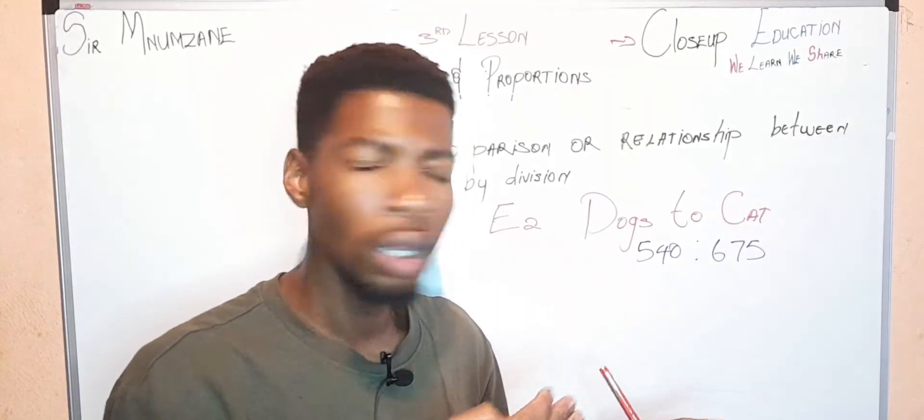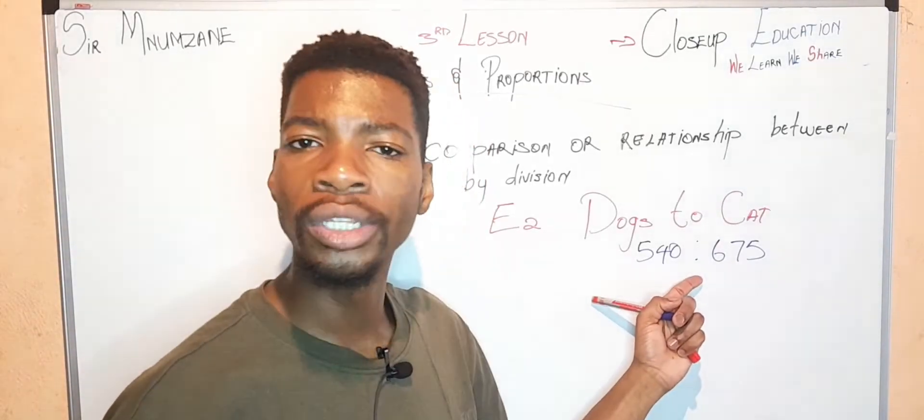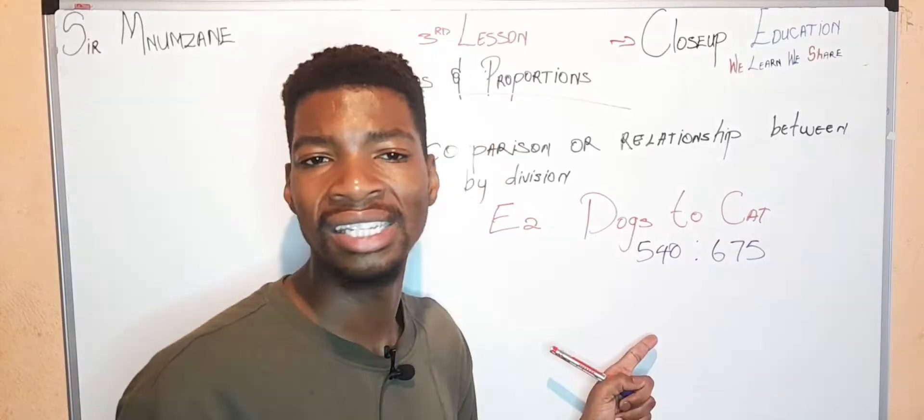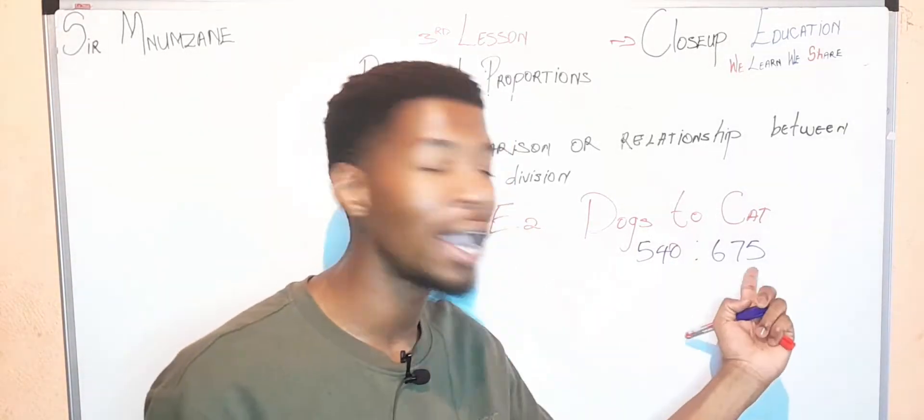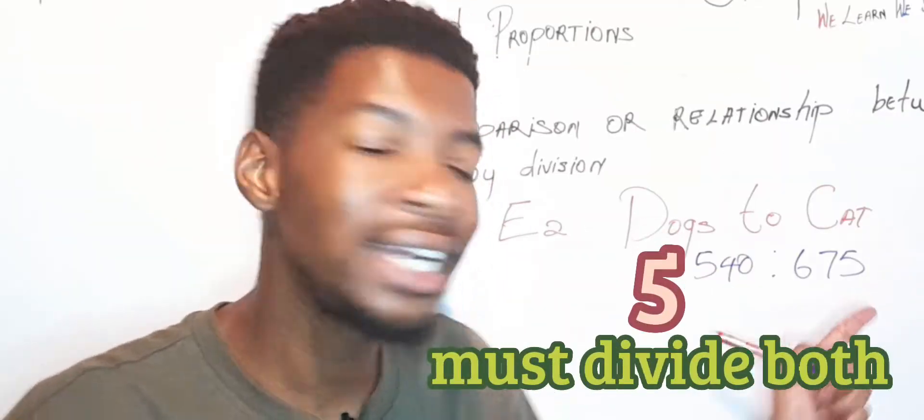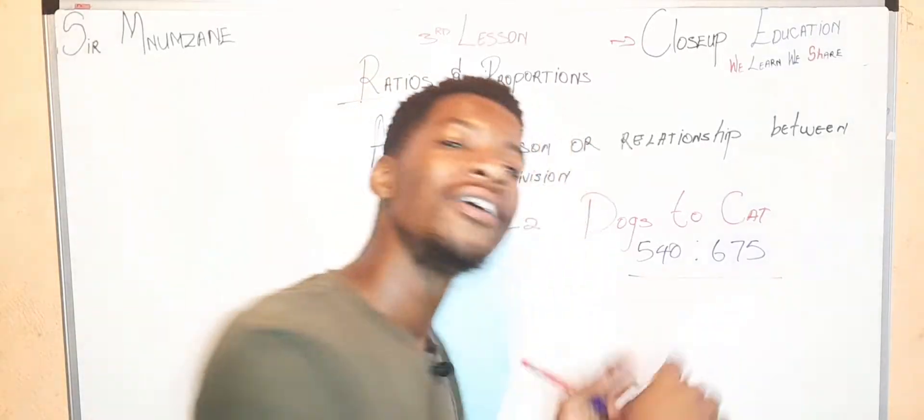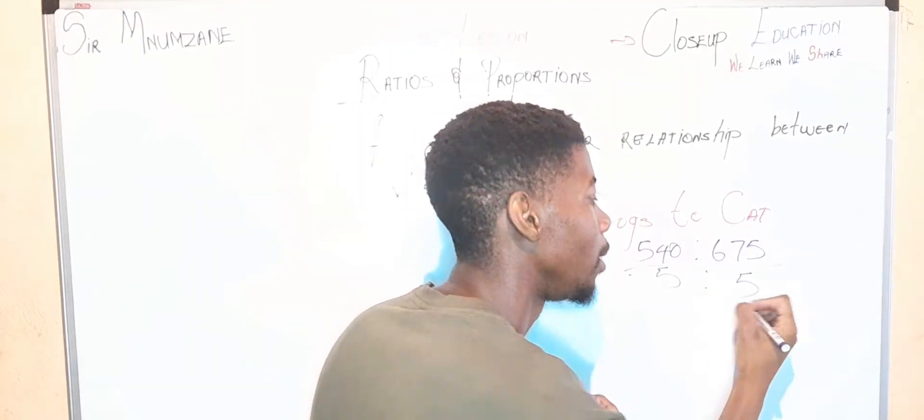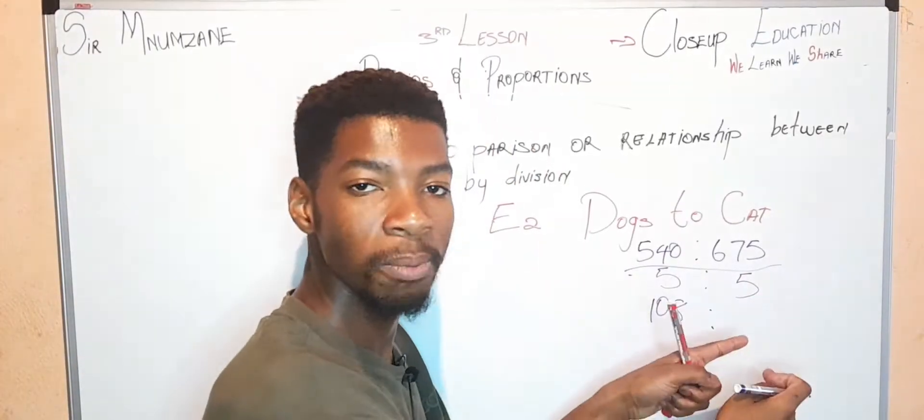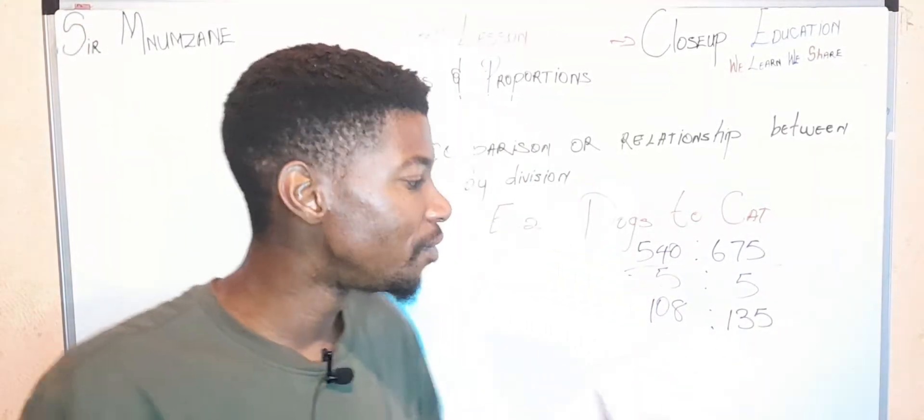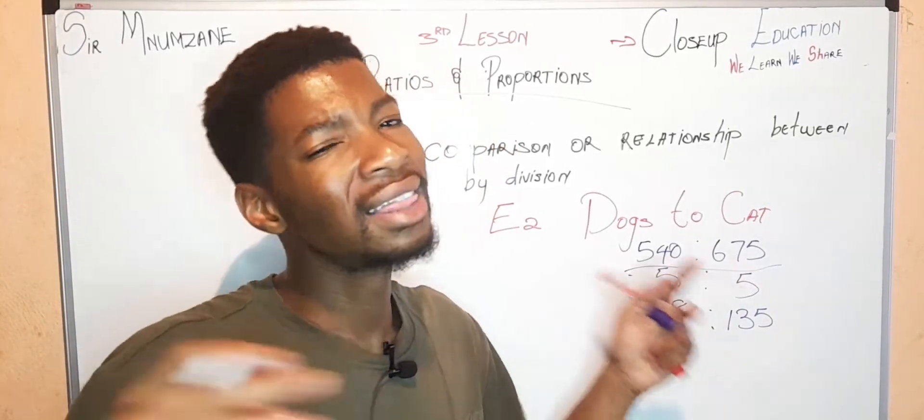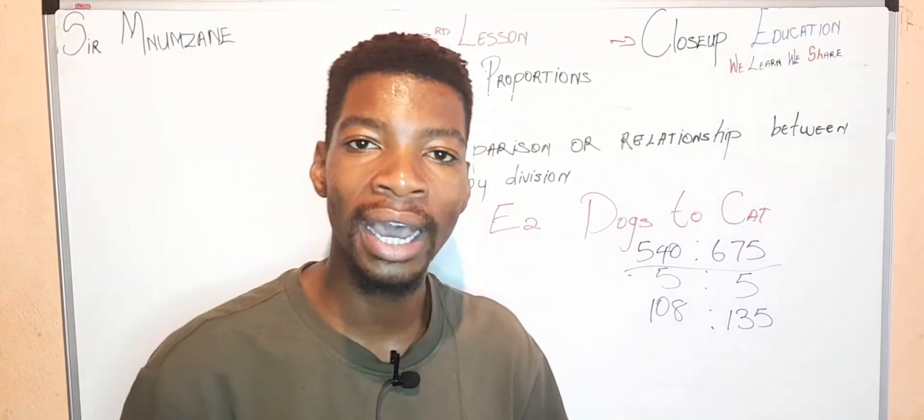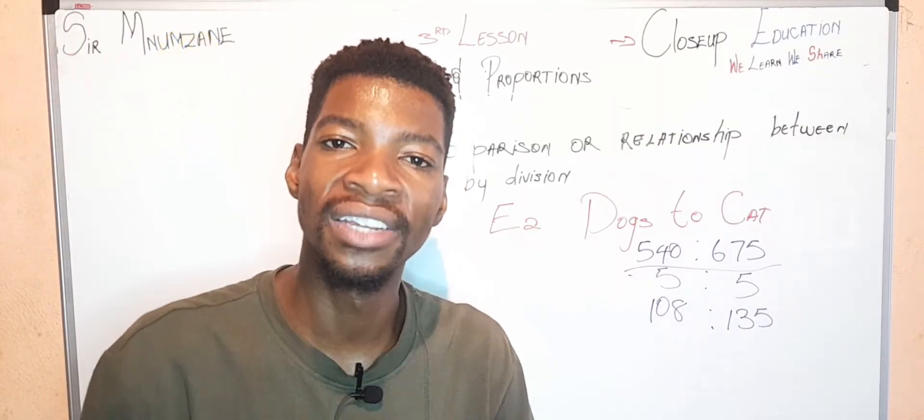How do you simplify the ratios? First look at the numbers you are given. 540 doesn't have any odd numbers, so we'll skip it. 675 has the odd number 5, so we'll use 5 to divide both values. So 540 divided by 5 is 108, and 675 divided by 5 is 135.